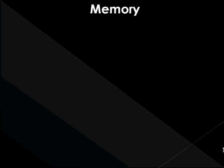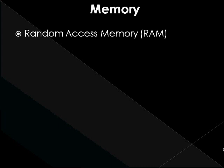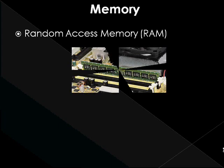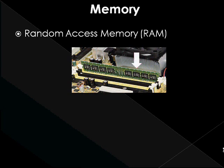Memory. Every computer comes with a certain amount of physical memory, usually referred to as random access memory. You can think of main memory as an array of boxes, each of which can hold a single byte of information. A computer that has one megabyte of memory can therefore hold about one million bytes, or characters, of information. Whenever software is installed on a computer, it is placed on the hard disk of the computer. However, when that software is run — that is, when you double-click on its icon — it has to be transferred to the memory of the computer for the CPU to be able to execute it. There are several types of RAM.